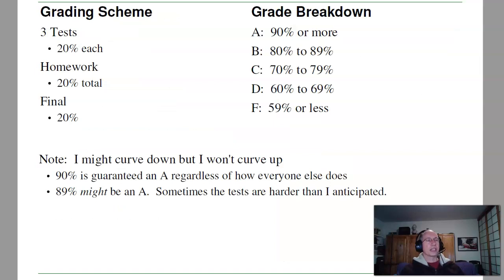The grading scheme in this class is we'll have three tests, a homework set, and a final, all with equal weighting. And the grade breakdown is the standard. 90 to 100 is an A, 80 to 89 is a B, and so on.